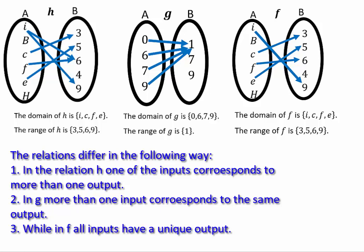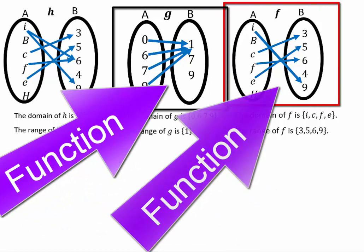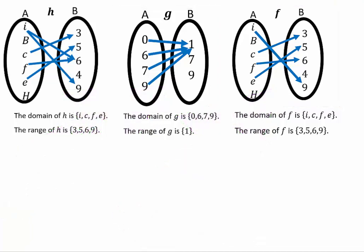Relations in which each input corresponds to a unique output are called functions. In our case, g and f are both functions but h is not, because in h, i has two outputs corresponding to it. Whereas in g and f, every single input corresponds to a single output. Even though in g one output corresponds to several inputs, that's not a problem. As long as all inputs correspond to a unique output, then we say that relation is a function.